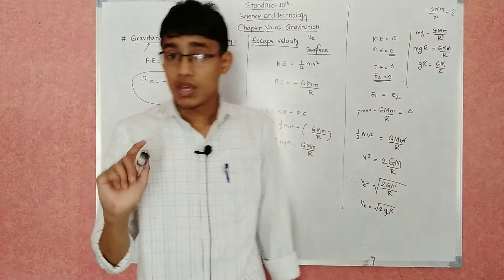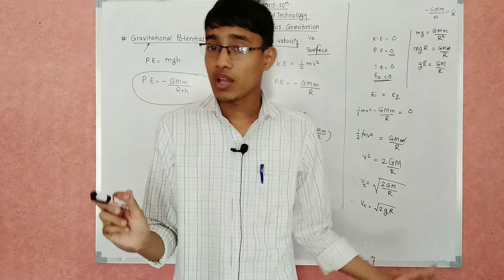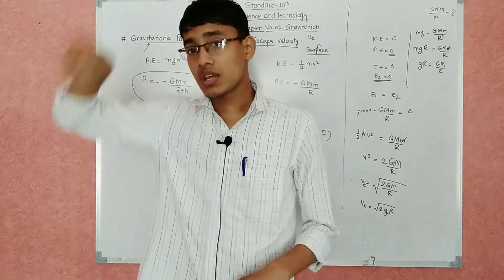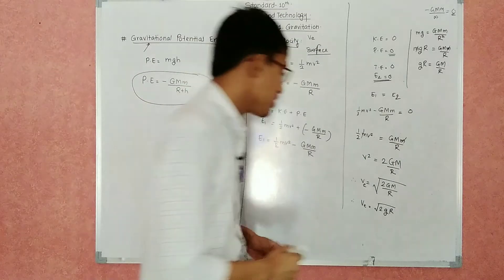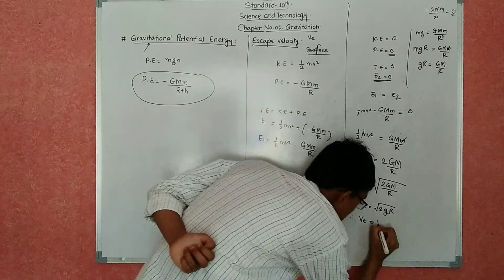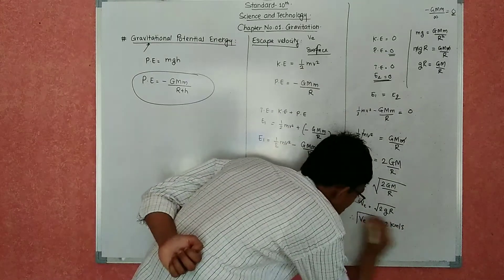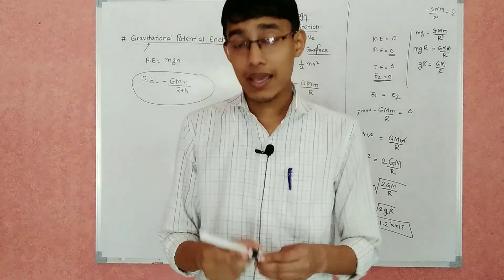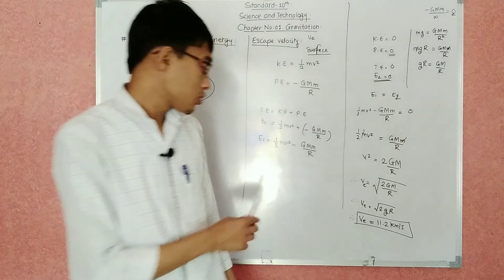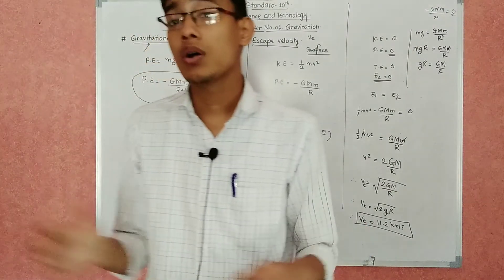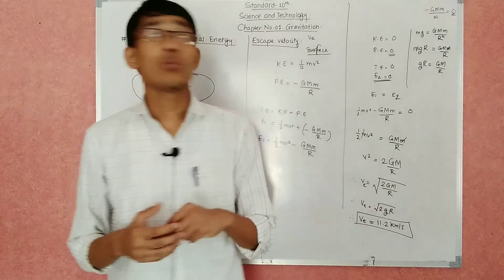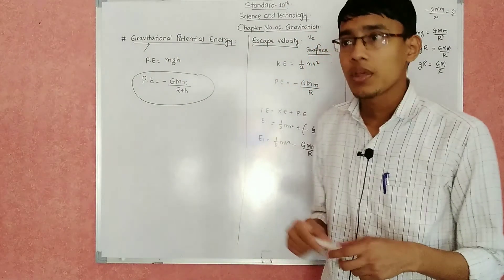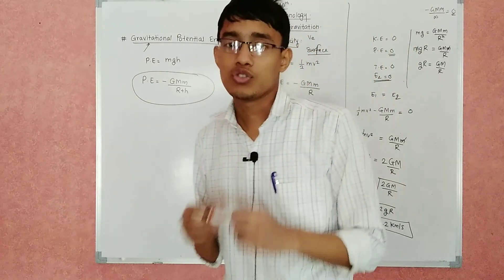For Earth, acceleration due to gravity g = 9.81 m/s² and radius R = 6400 km. Calculating √(2 × 9.81 × 6400), we get escape velocity = 11.2 km/s. The escape velocity of Earth is 11.2 km/s — this value is very important to remember. With this, chapter one on Gravitation is complete. Your homework is to solve the exercises of this chapter, and in the next lecture we will start a new chapter. Thank you.